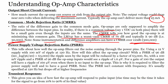Power supply rejection ratio, or PSRR, tells how well the op-amp filters out noise coming through the power supply pins. For example, a 12-volt supply with 100 millivolts of ripple at 120 Hz — how does this affect the op-amp circuit? With a PSRR of 96 dB, we get a factor of 63,000, so the ripple seen at the input is reduced by a factor of 63,000. With 100 millivolts of ripple and a PSRR of 96 dB, the op-amp input would see a ripple of only 1.6 microvolts.